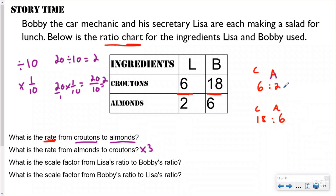We know we are multiplying by 3 when going from almonds to croutons, but because ratios are a multiplicative comparison, instead of saying 'dividing by 3' going back, we say 'multiplying by one-third.' Six times one-third equals two. The reason we multiply by the reciprocal — one-third instead of dividing by three — is because ratios are multiplicative relationships.